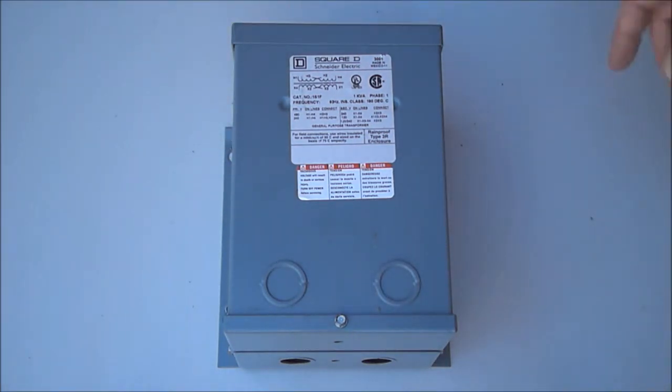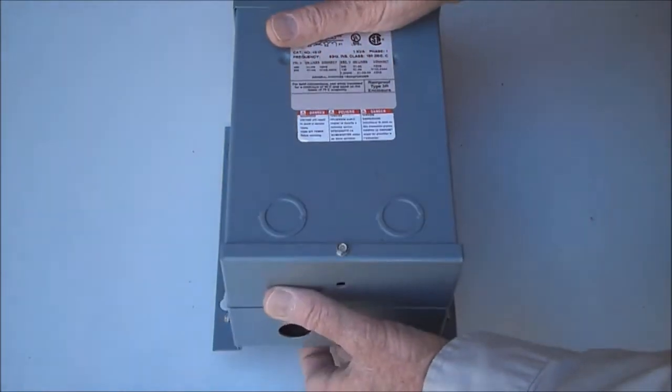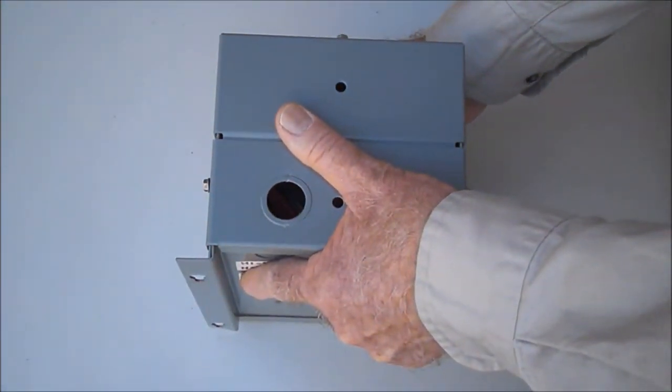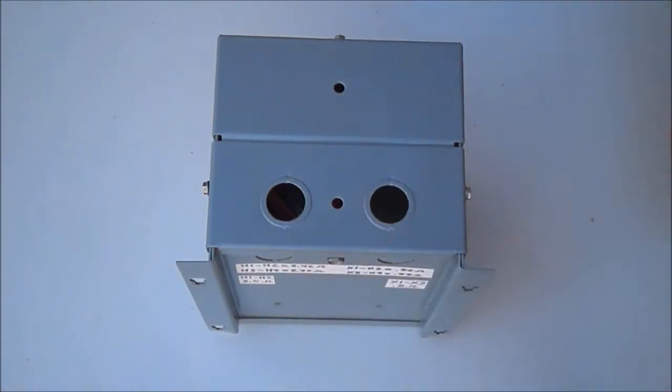It's a fairly small transformer, so we're able to put it on its top revealing the bottom that allows entry into the bottom quadrant, which is the wiring compartment, through conduit knockouts on the front, sides, back, and bottom of the enclosure.